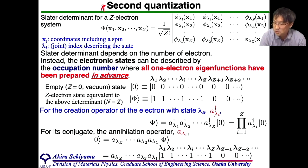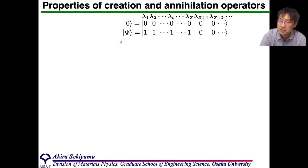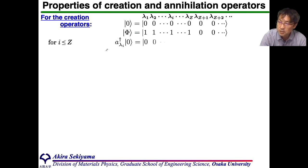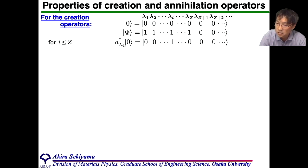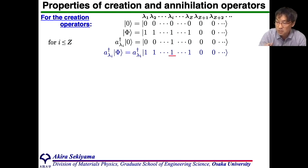In the second quantization, a† and a are introduced. I explain the property of the creation and annihilation operators by comparing these two states. For the creation operator, when we occupy an electron into the state λ_i from the vacuum state, we can describe such a state as this formula. But when we put an additional electron into the λ_i state, which has already been occupied in state phi, we cannot put it in the same state — the state becomes zero.